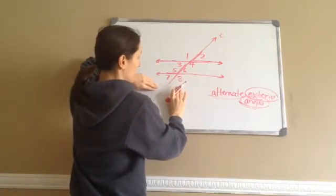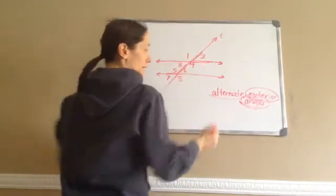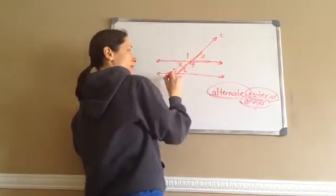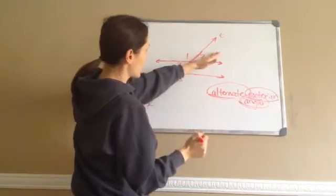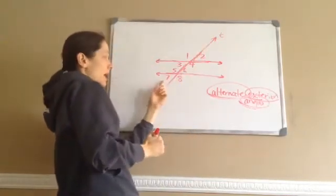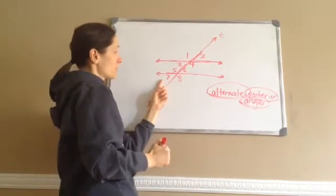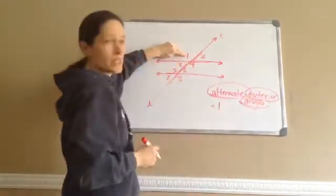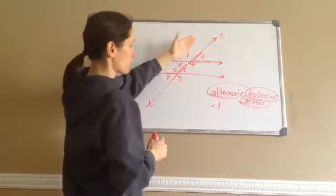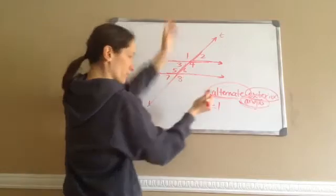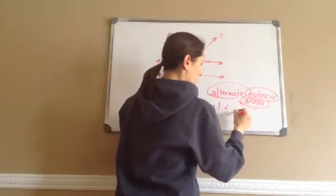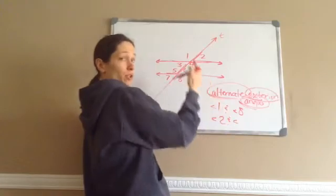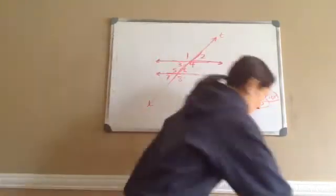These are interior angles — we're going to learn about those in just a minute. Now, what does alternate mean? Alternate means 2 and 7 are on opposite sides. 2 is on the right side, exterior. 7 is on the left side, exterior. So what is the alternate exterior angle for angle number 1? The answer is 8. This one's on the left side, this one's on the right side, both exterior. Angle 1 and angle 8 are the alternate exterior. What about 2? Angle 2 and angle 7. Those are alternate exterior.